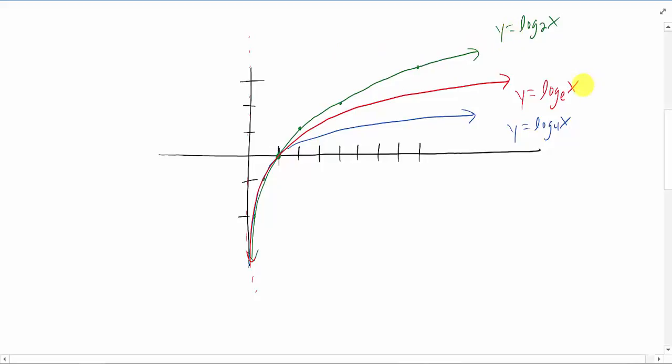Now, this log base e of x is such a special function that we give it a different name. We call it the natural log of x, or log natural x. It's just that we happen to deal with this function, this log base e function, so often that we want to kind of shorten the name.